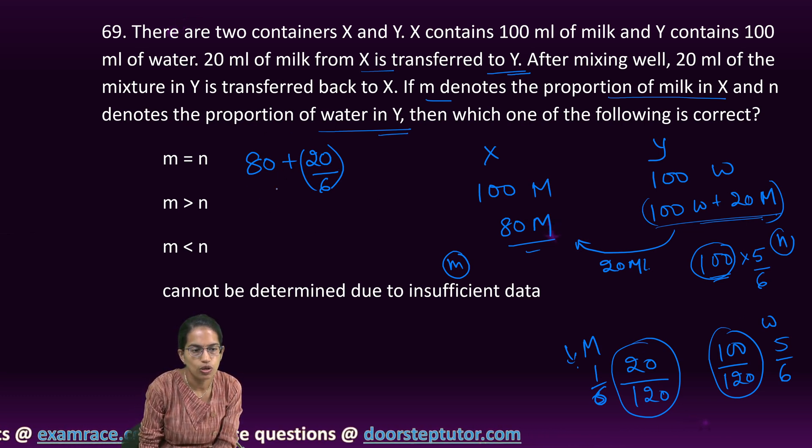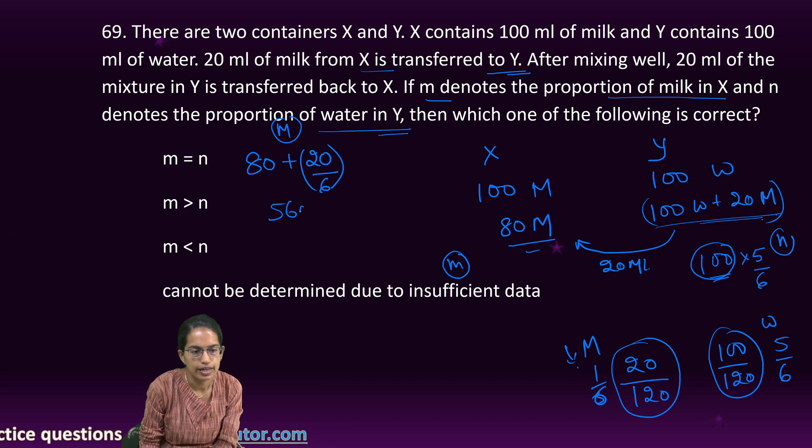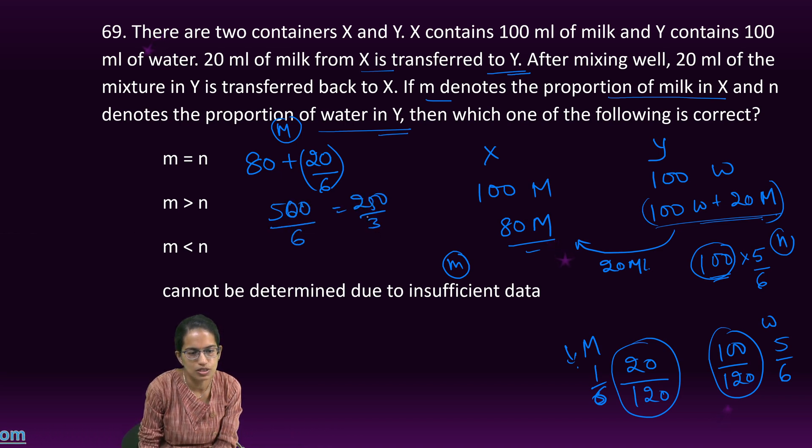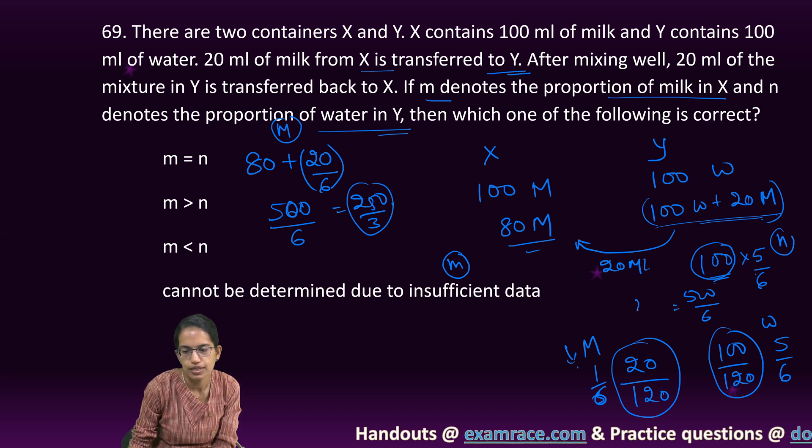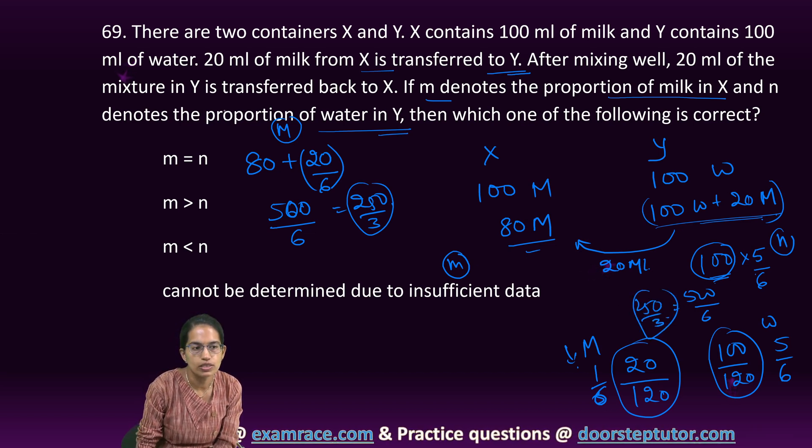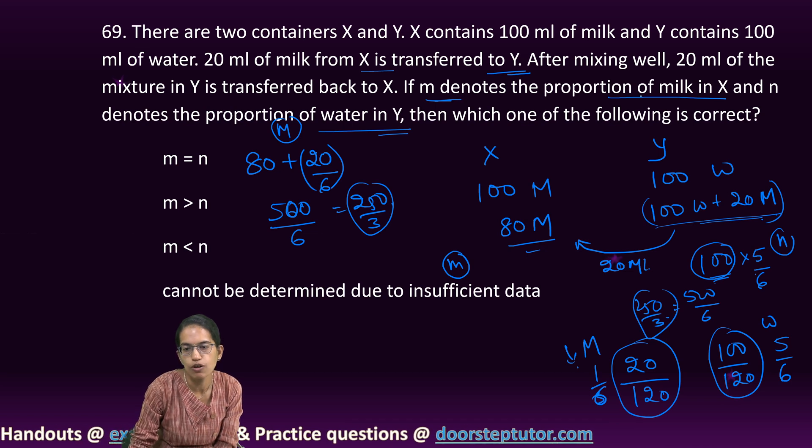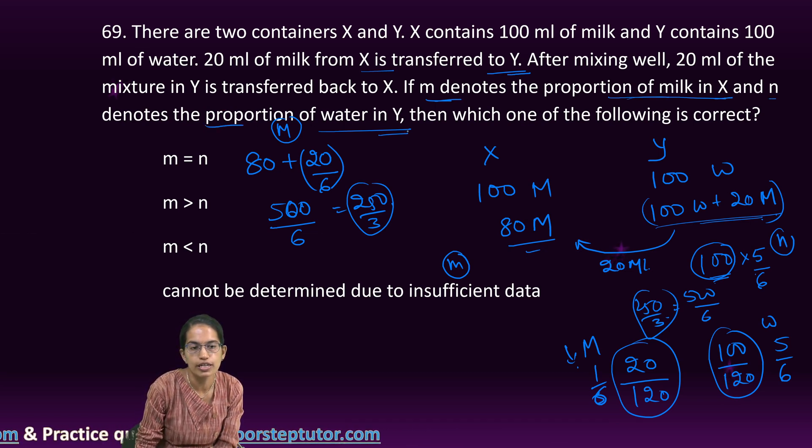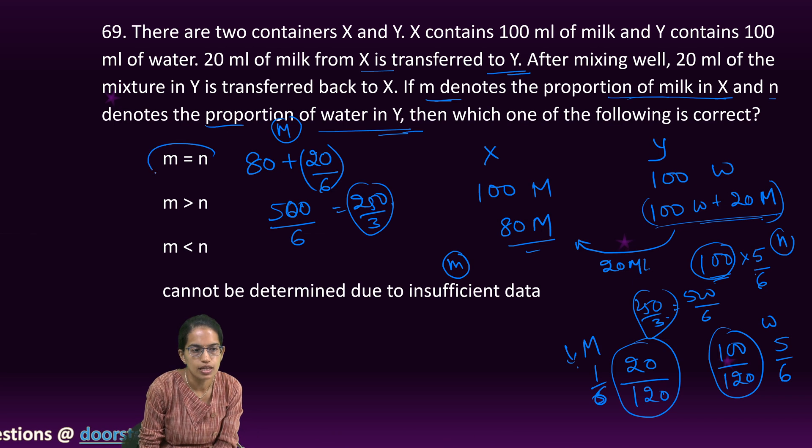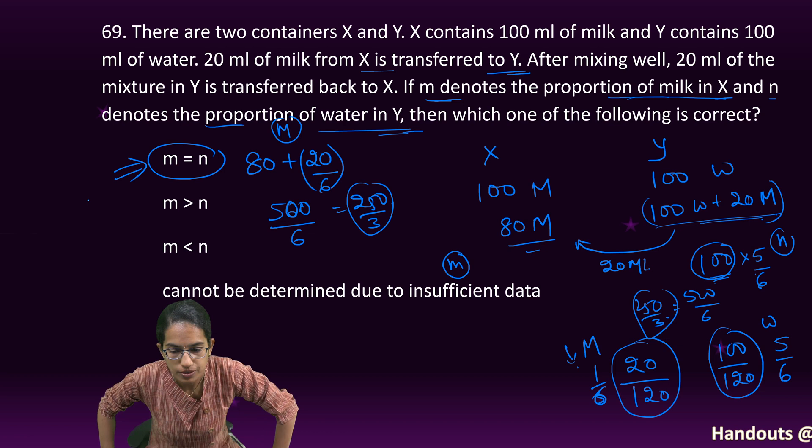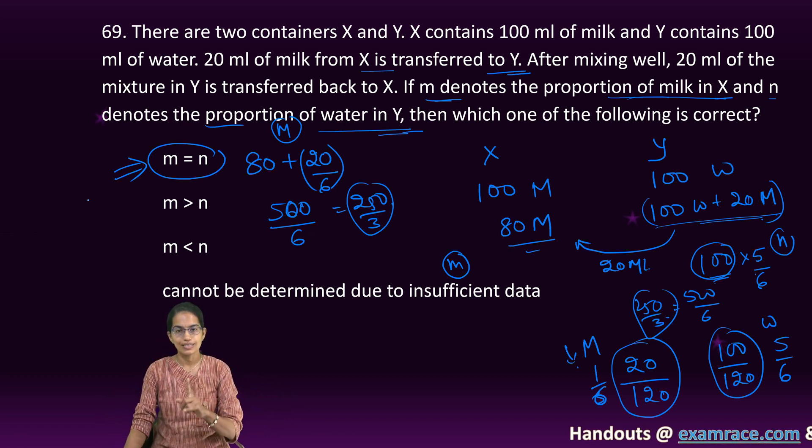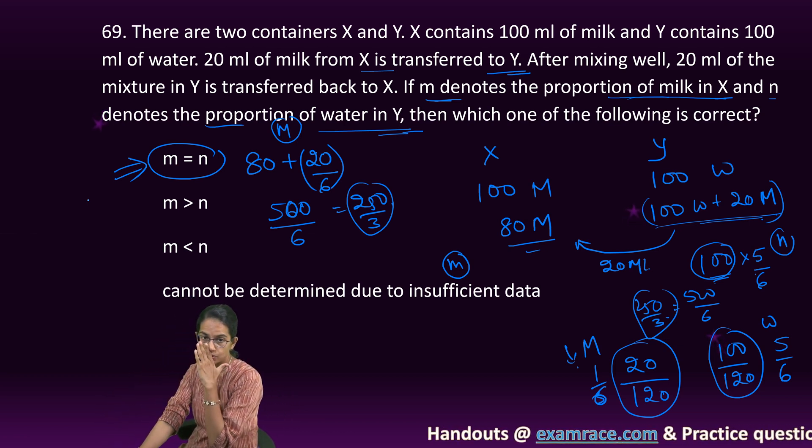Here I solve the concentration of milk. I get 500 by 6 or 250 by 3. Again here, I get 500 by 6 or 250 by 3. That means the proportion of milk in X and water in Y would be equal. So M is equal to N would be the right answer.